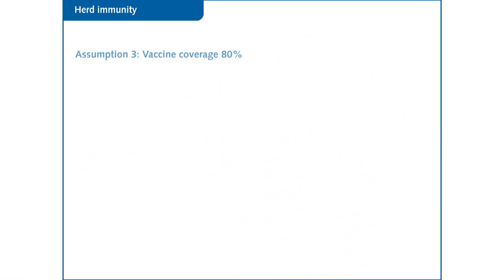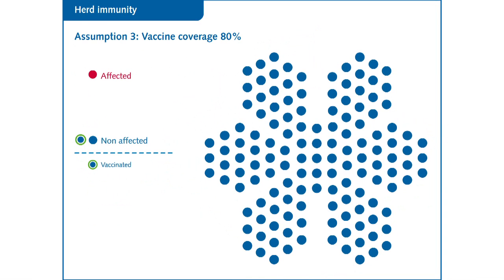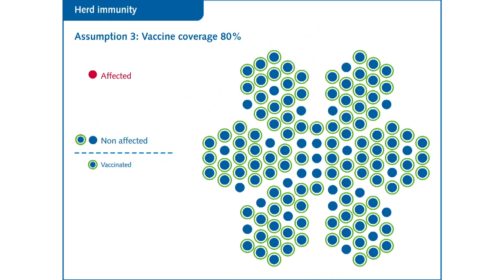Coverage of 80%. In the third hypothesis, the level of vaccination coverage is brought up to 80%. The spread of the disease is rapidly halted. Herd immunity is in full swing and a large part of the population is protected either directly or indirectly. This is the reasoning for high vaccination coverage.